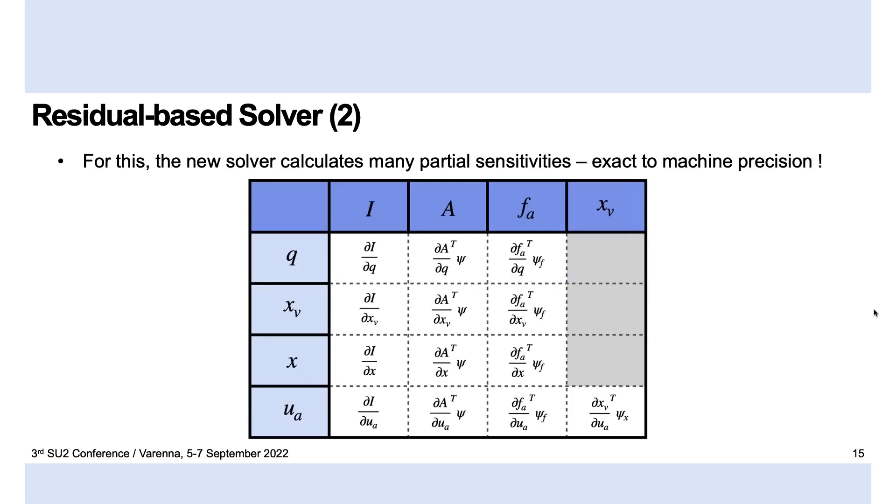So here is the table summarizing the partial derivatives that we implemented. Just as a side note, we aren't storing all the partial derivatives explicitly because some of them are large matrices and we store only the matrix-vector products of these partial derivatives with the adjoint variables when appropriate. We validated these all to be exact to machine precision compared to finite differences.